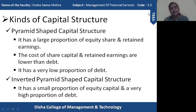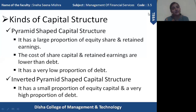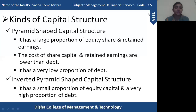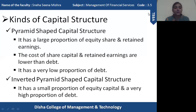In pyramid-shaped capital structure, there is debt, but if you compare proportions, share capital is much larger than debt financing. The two major reasons are the risk element and the cost of raising capital. Because the cost of equity shares and retained earnings is very low and these organizations prefer to avoid risk, they go for this structure — a larger portion from share capital and retained earnings and a lower proportion of debt.